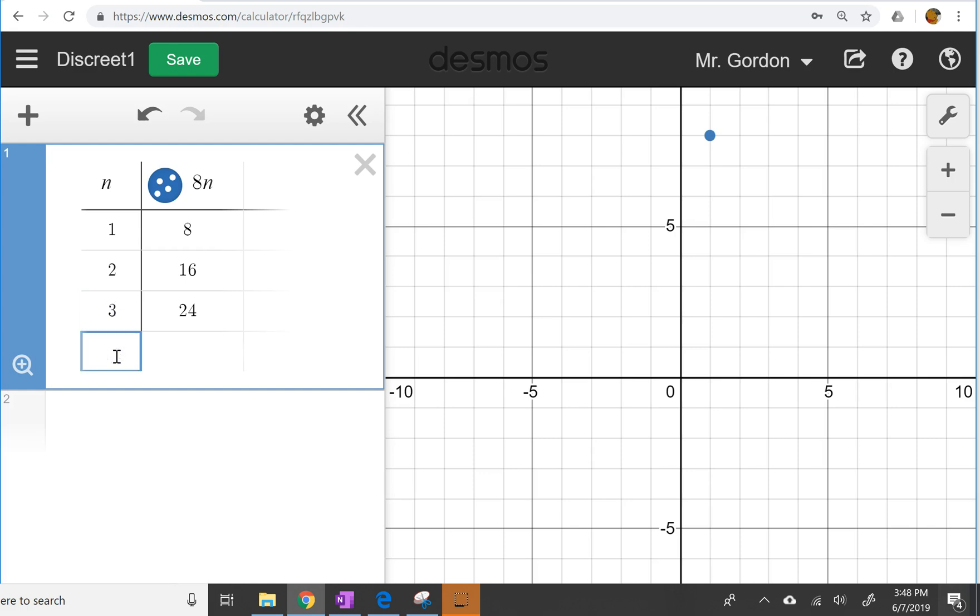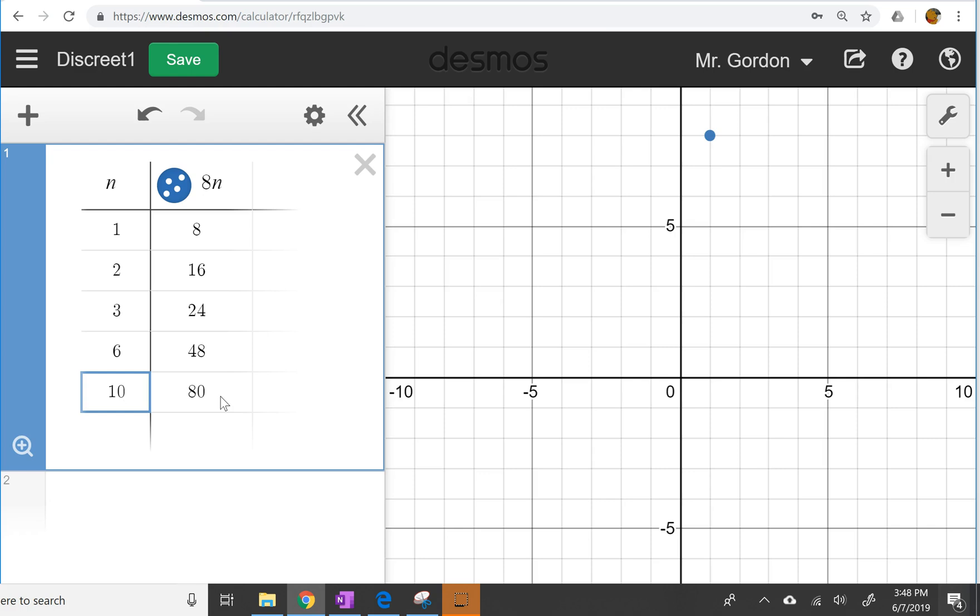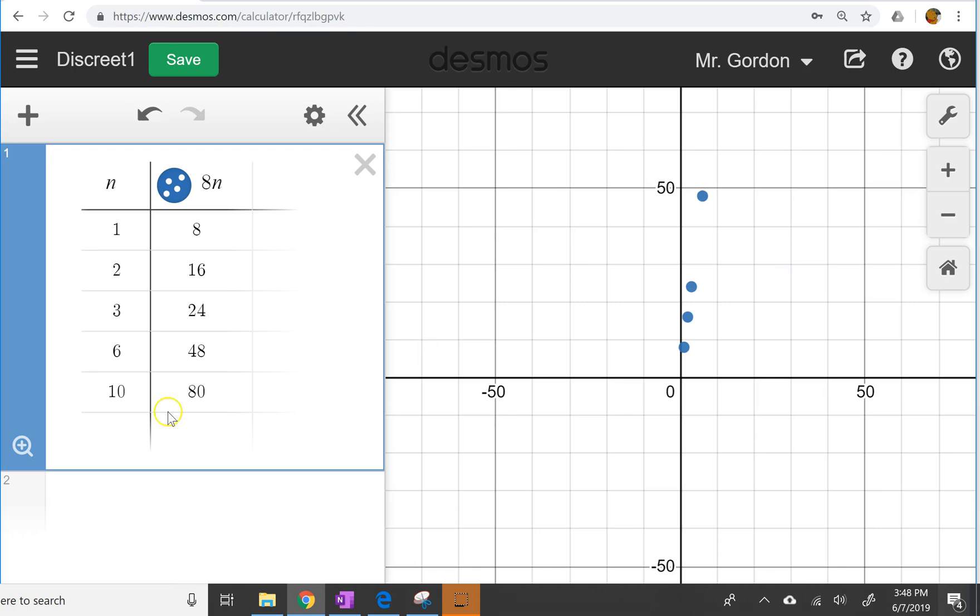3 boxes is 24 books. It asks for 6 boxes and 10 boxes. So I actually answered the equation part first and used that to make my table more efficiently. So 80 books for 10 boxes, 48 books for 6 boxes. And so let's zoom out over here so we can get a clearer picture of what that looks like. So these are just some of the points.